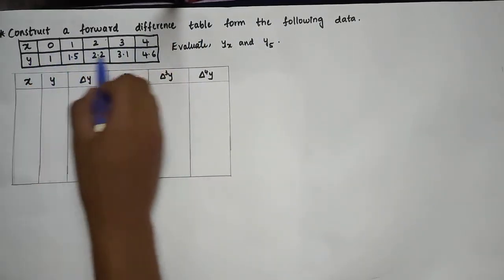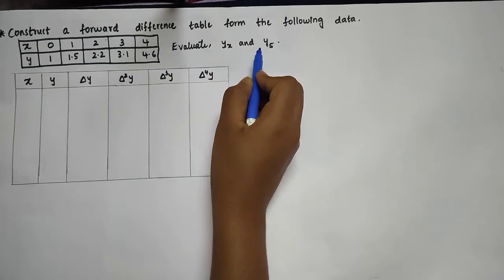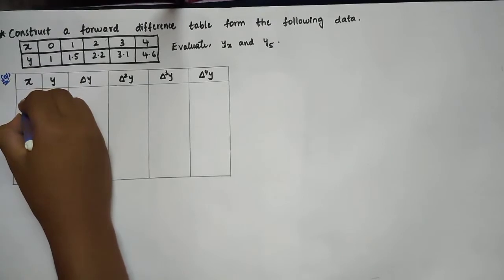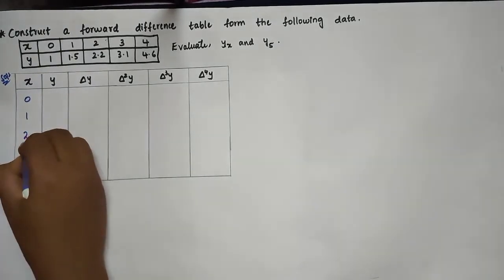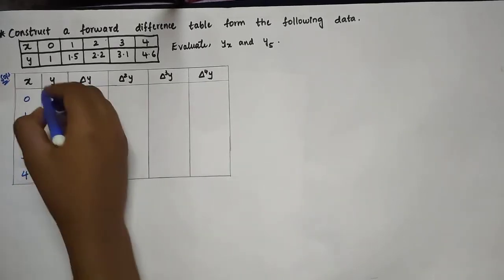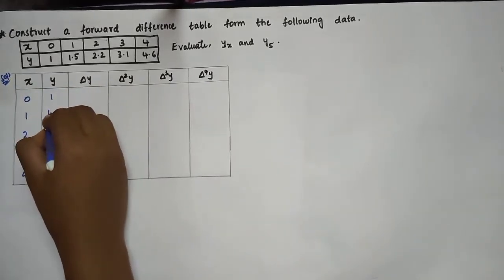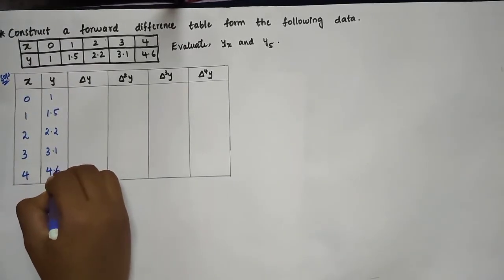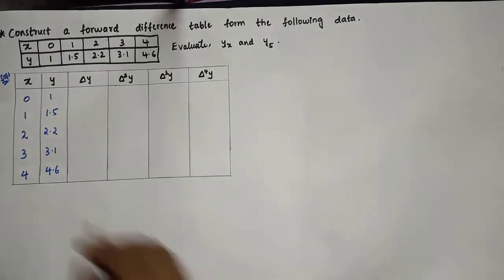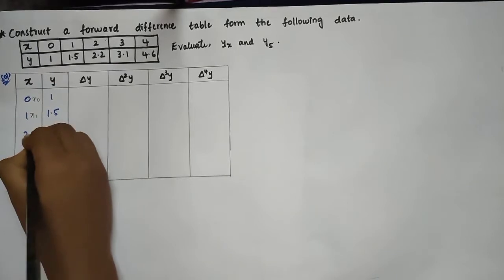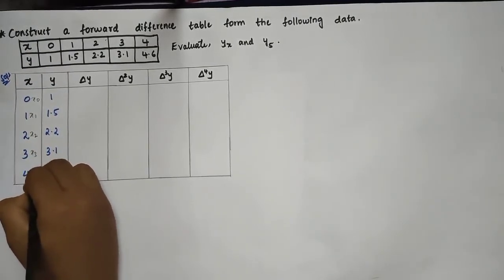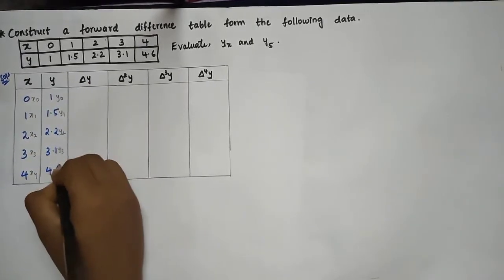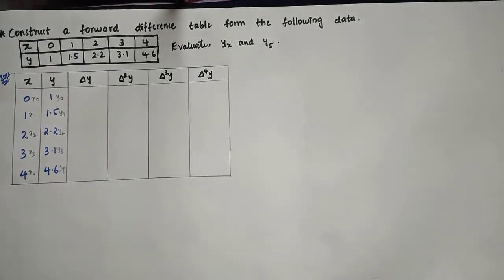The x values and y values are given; we need to evaluate y(x) and y(5). The x values are 0, 1, 2, 3, 4 and the corresponding y values are 1, 1.5, 2.2, 3.1, and 4.6. Label these as x₀, x₁, x₂, x₃, x₄ and y₀, y₁, y₂, y₃, y₄.